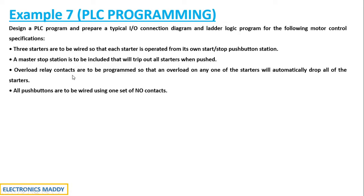The third condition is that overload relay contacts are to be programmed so that an overload on any one of the starters will automatically drop all of the starters. Overload relays are used for protection — because of inrush currents during motor starting, current levels can be very high. They are programmed such that if any one starter has a very high current or voltage, the overload relay should trip and bring the corresponding starter to a halt.